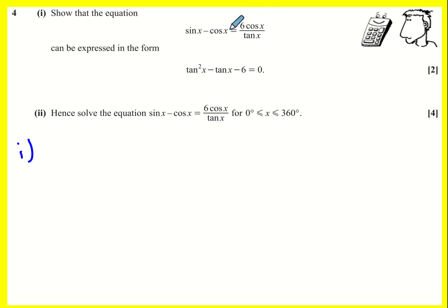So somehow we've got to get rid of the sine and the cos in this equation. First thing I would recommend when you have this sort of equation is, we don't really want to be dividing by tan x, so let's multiply through by it. So sine x tan x minus cos x tan x is going to equal 6 cos x.